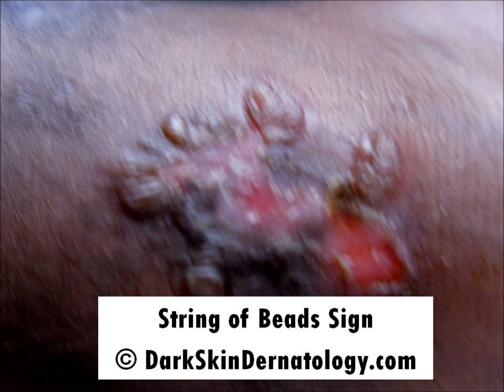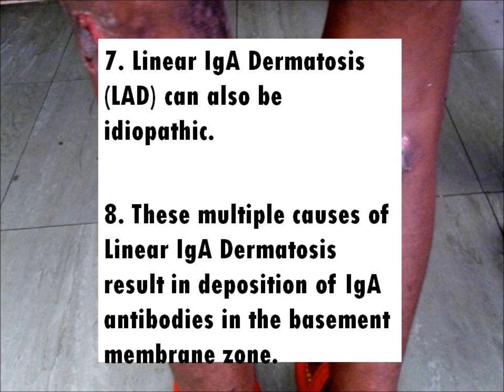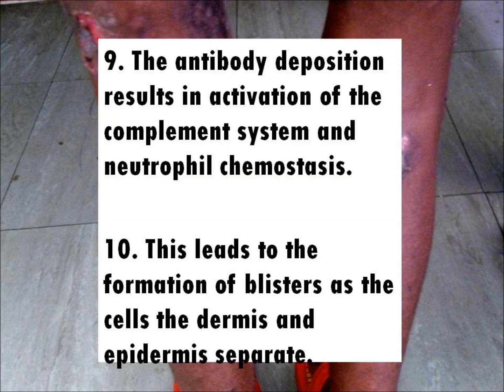Fact 7: Linear Immunoglobulin A Dermatosis can also be idiopathic. Fact 8: These multiple causes of Linear Immunoglobulin A Dermatosis result in deposition of immunoglobulin A antibodies in the basement membrane zone.